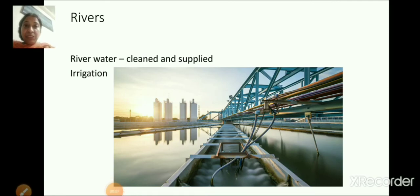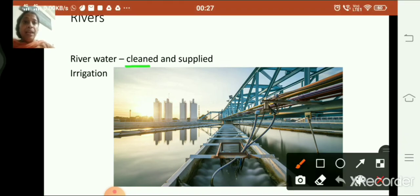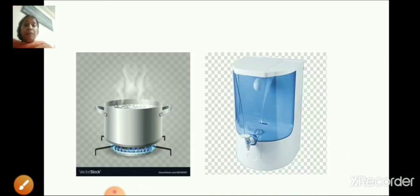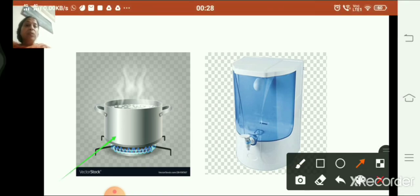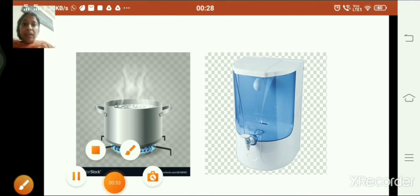Rivers. In places where there are rivers, the river water is cleaned and supplied as drinking water. That is, the water is treated before it reaches the tap. It is also used for irrigation. So children, before drinking, you can either boil the water or you can use a water filter, which is good for your health.